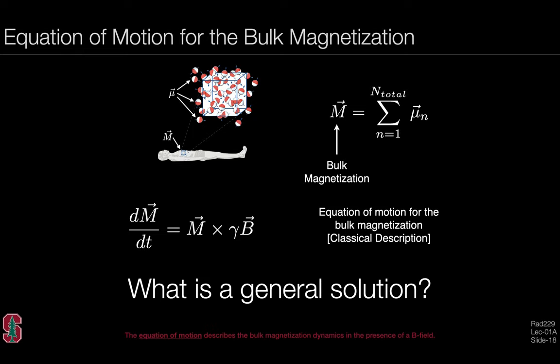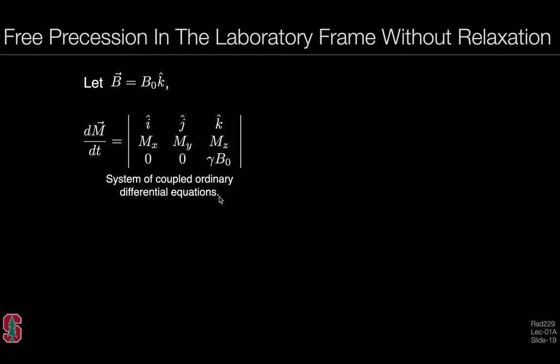Given a system of differential equations like this, what's the general solution? The first thing is to remember that the B field we care about is just B0 along the K direction. We can expand the cross product into a determinant. We have the individual components of the bulk magnetization, and the only externally applied B field is on the K direction—zero on X, zero on Y, and gamma B0 on the K direction. This represents a system of coupled ordinary differential equations. We can write these out as individual expressions. The time derivative of the MX component depends on the MY component, and the time derivative of the MY component depends on the MX component. The MZ component under these conditions is independent.